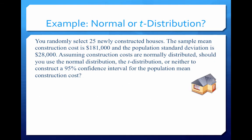Let's look at an example. You randomly select 25 newly constructed houses. The sample mean construction cost is $181,000 and the population standard deviation is $28,000. Assuming construction costs are normally distributed, should you use the normal distribution, the t-distribution, or neither to construct a 95% confidence interval for the population mean construction cost?